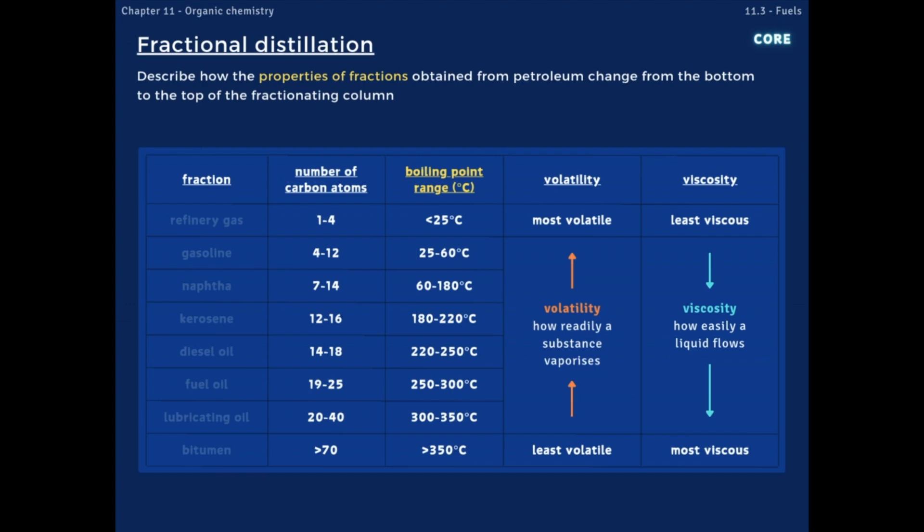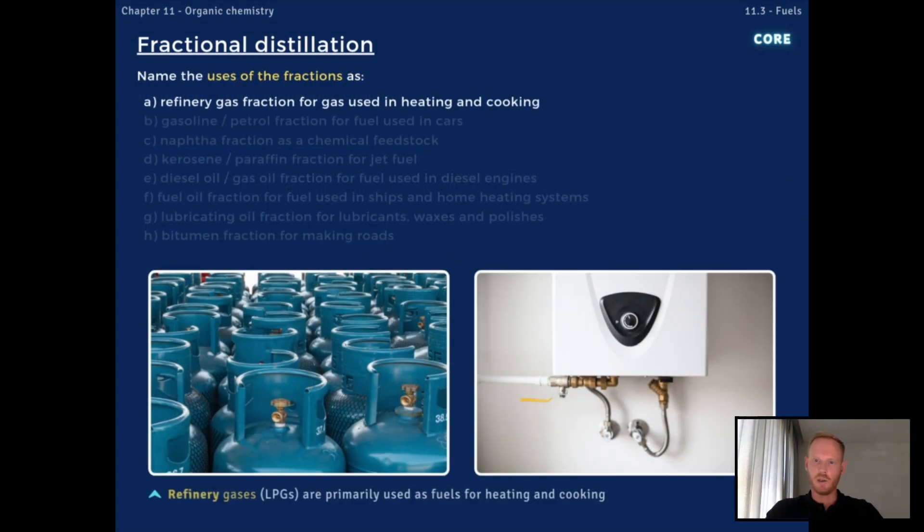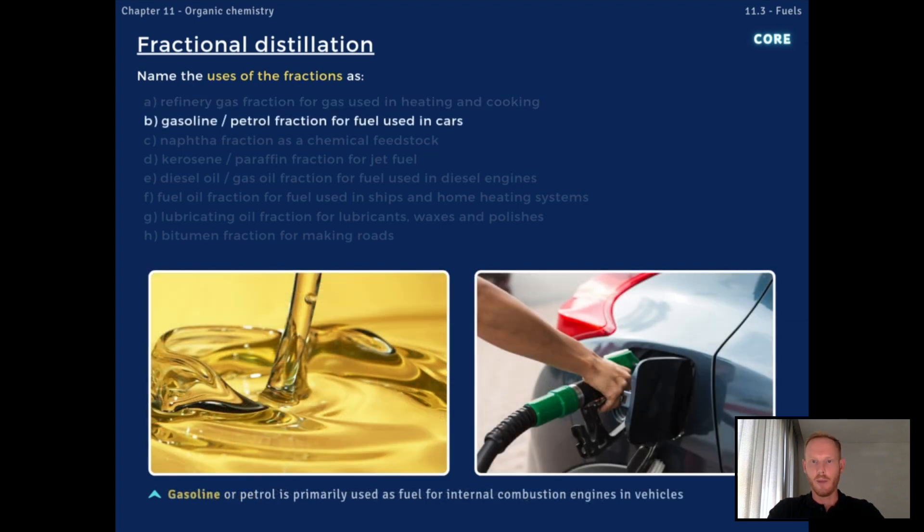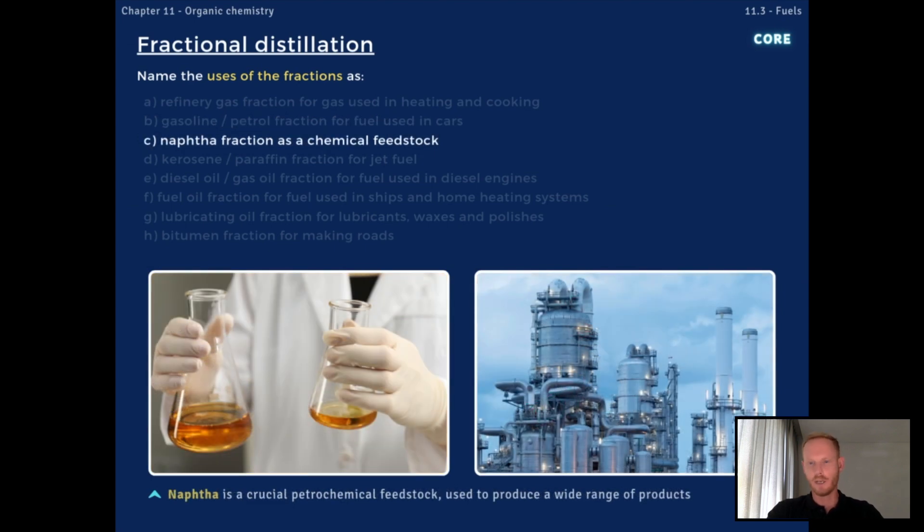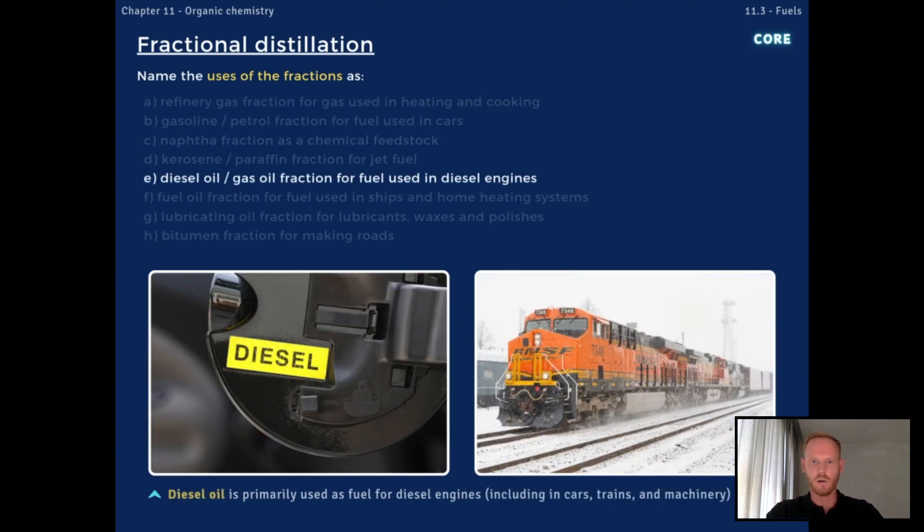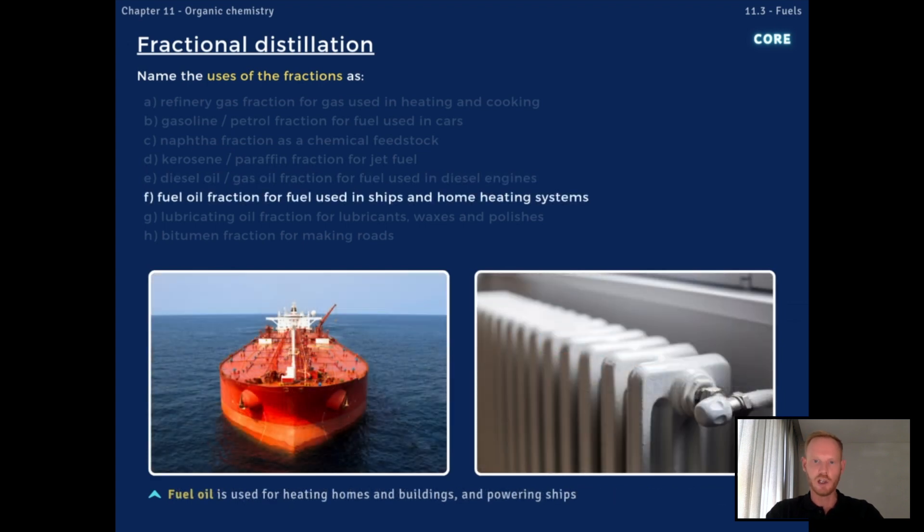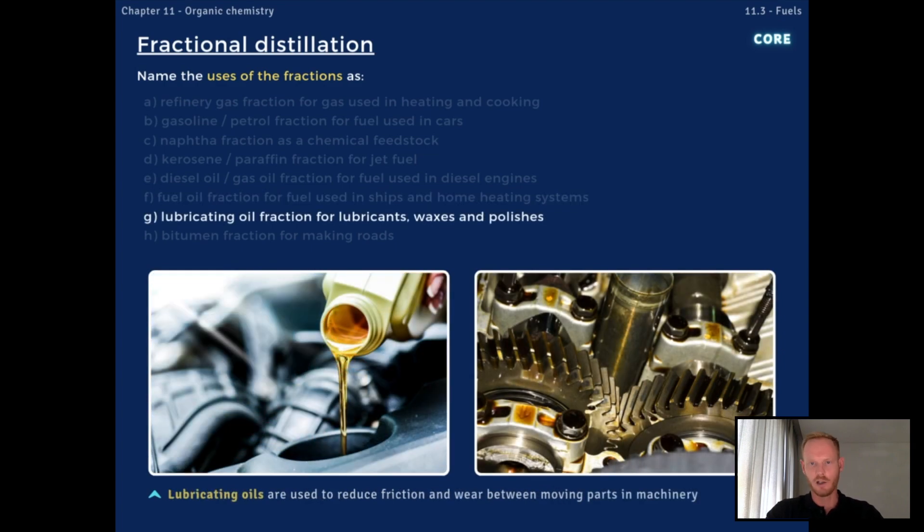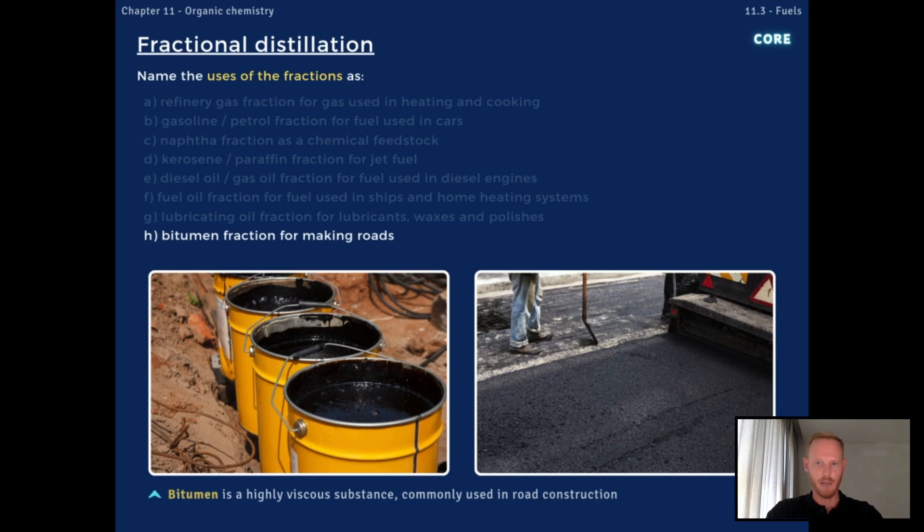Working from the top of the fractionating column to the bottom, the names and uses of the fractions obtained include refinery gas for gas used in heating and cooking, gasoline or petrol for fuel used in cars, naphtha as a chemical feedstock, which is a raw material used in the mass production of chemical products, kerosene or paraffin for jet fuel, diesel oil or gas oil for fuel used in diesel engines, fuel oil for fuel used in ships and home heating systems, lubricating oil for lubricants, waxes, and polishes, and finally bitumen for making roads.